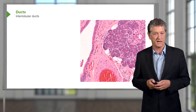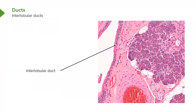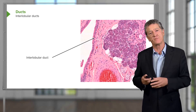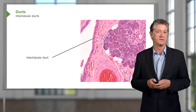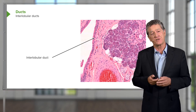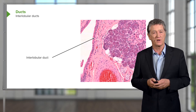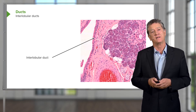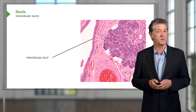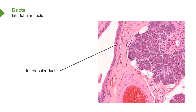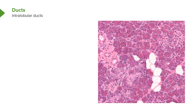Here's an interlobular duct. Notice the secretory acini or secretory units on the right-hand frame of this slide. The secretory units are serous because they're rather dark pink staining — those are the protein granules at the apex of the cell. Look at the duct: it's separated from the secretory units by a fair bit of connective tissue, which indicates that the connective tissue is dividing the gland into different lobules. Down below, the structure with a reddish colour in the middle is a blood vessel. Blood vessels and ducts typically accompany the connective tissue septa separating lobules from each other.